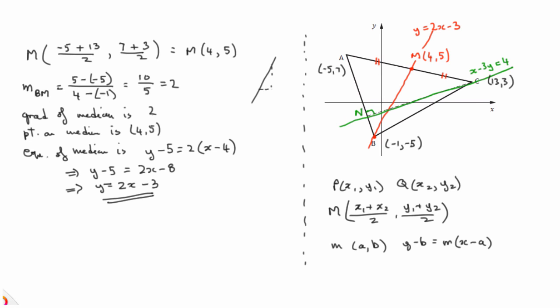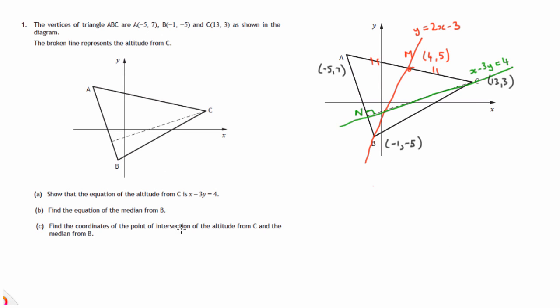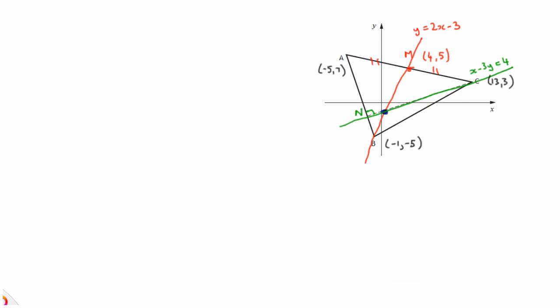So the final part of this question: find the coordinates of the point of intersection of the altitude, that's the green line, and the median from B, that's the red line. So we're after this point here. What we're going to do now is, since we know both of these equations, we're going to solve them simultaneously to find the one point, the coordinates of the one point that satisfies both these equations. So we have this set up. We're going to solve y equals 2x minus 3 and x minus 3y equals 4.